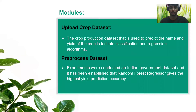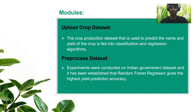The modules in this project are: first, upload the crop dataset. This crop dataset is used to predict the name and yield of the crop, which is classified and regressed using different algorithms. Next, the preprocessor dataset — this is conducted on an Indian government dataset and it has been established that the random forest regressor gives the highest yield prediction accuracy.